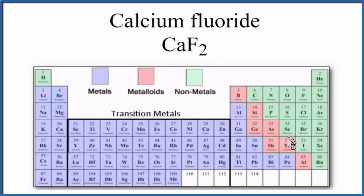So here we have the periodic table. It's divided into metals and nonmetals. So calcium right here in group 2, that is a metal. And then fluorine over here is a nonmetal. So we have a metal and some nonmetals.